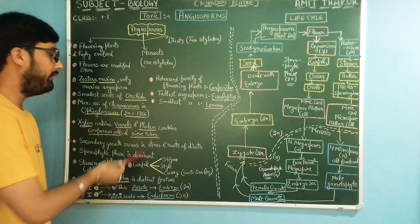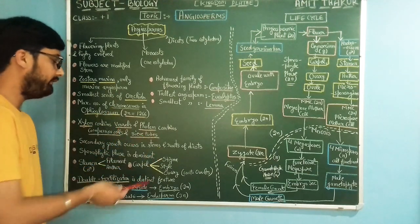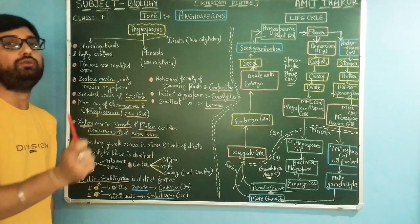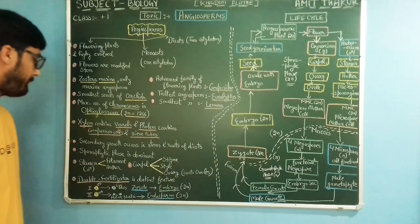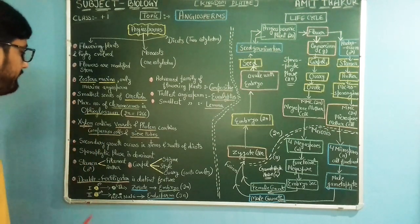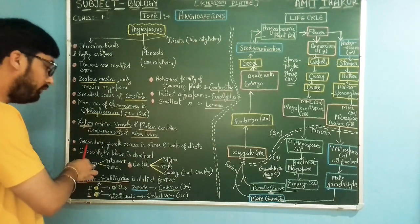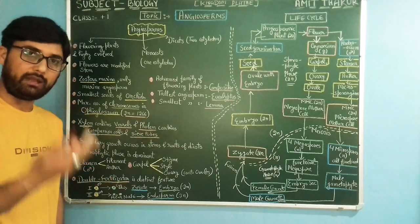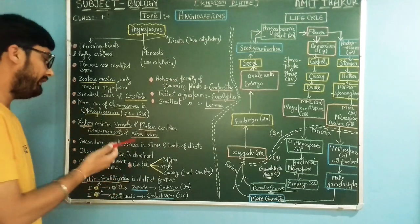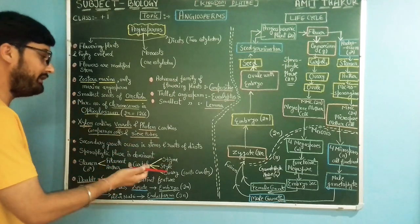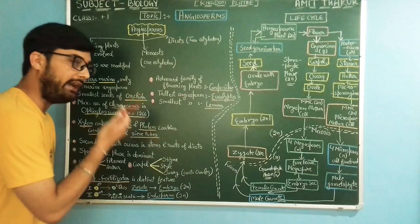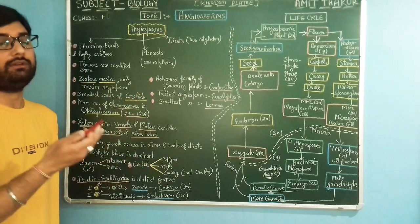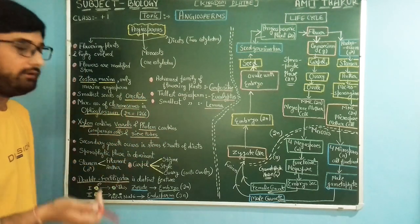Xylem also contains companion cells and sieve tubes. Secondary growth occurs in angiospermic plants, especially in the case of dicots — in the roots and stems of dicots.